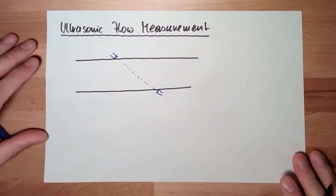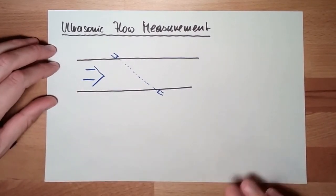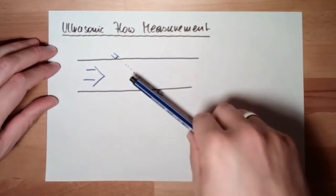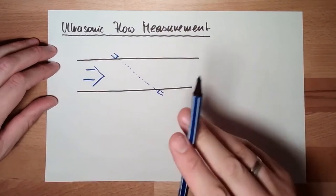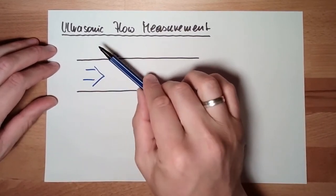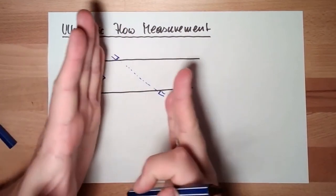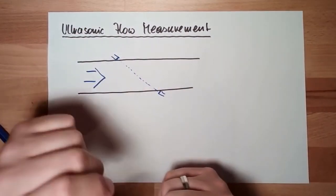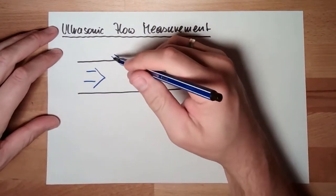It works that way that if we have flow here, the sound in this direction is much faster than this direction, because this here is in stream, this here is against stream. This is why they have to be set apart to measure the difference from this to this and from this to this. Both are sender and receiver.